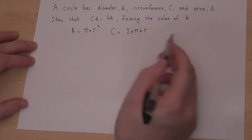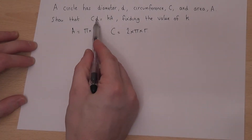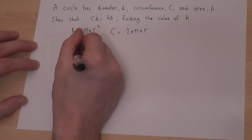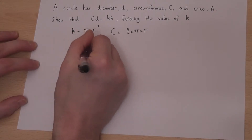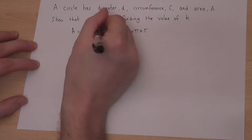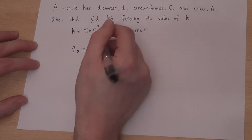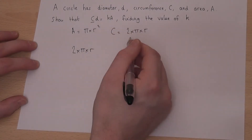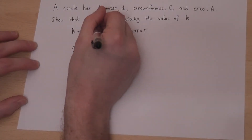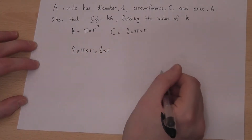So, if I work out c times d — the circumference is 2 times pi times r, and the diameter is just 2 times radius, so d is just 2 times radius.